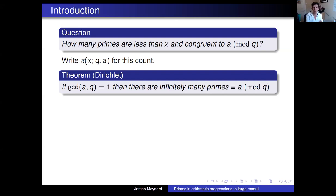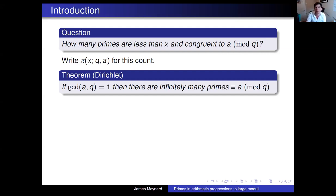As everyone here is very familiar with, provided a and q are co-prime, we know that there are infinitely many primes in any given reduced residue class a mod q, and so as x becomes larger and larger, the number of primes in any of these residue classes gradually tends to infinity — this is Dirichlet's famous theorem. Of course, if a and q aren't co-prime, there must be some common factor, so there can be at most one prime in that residue class.